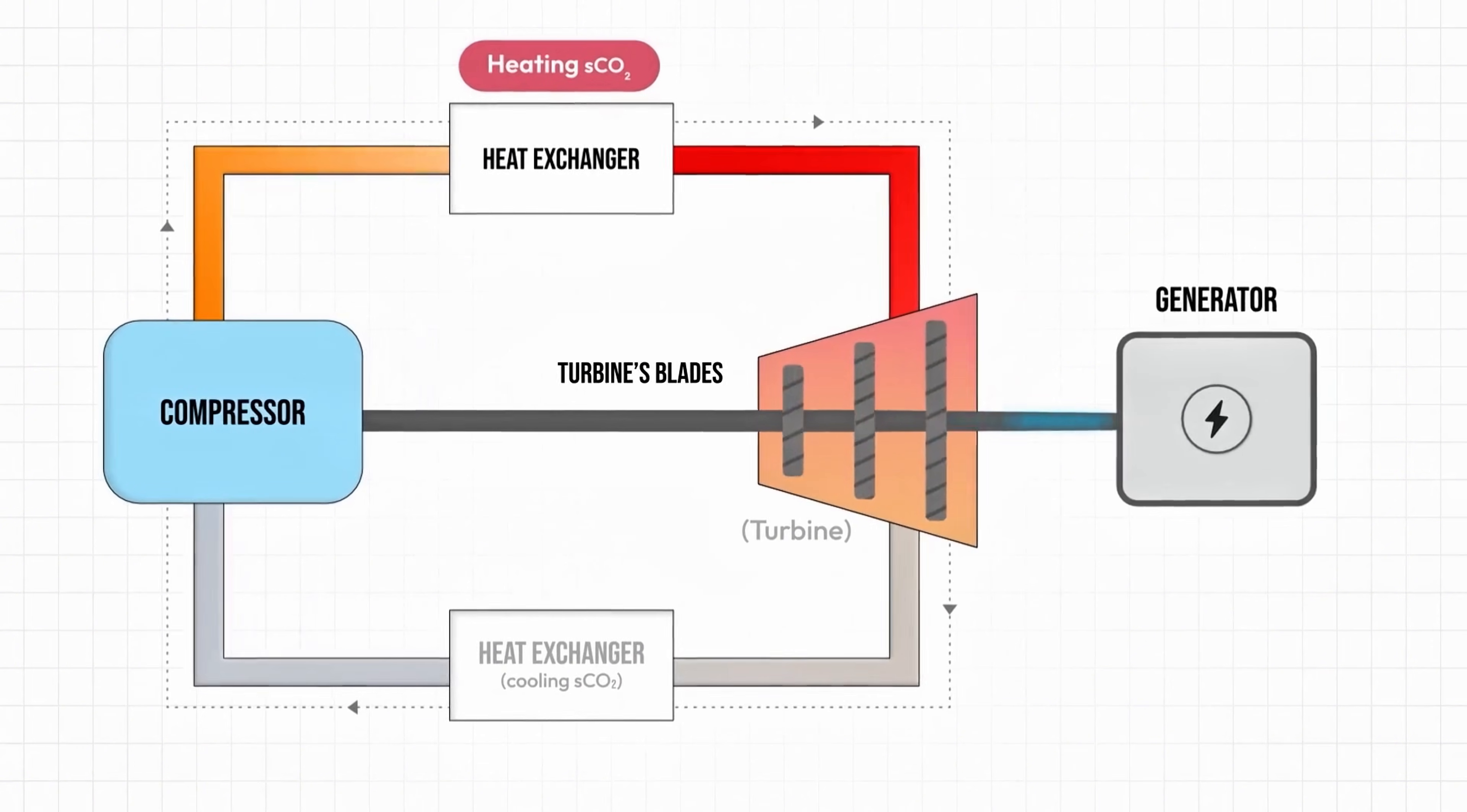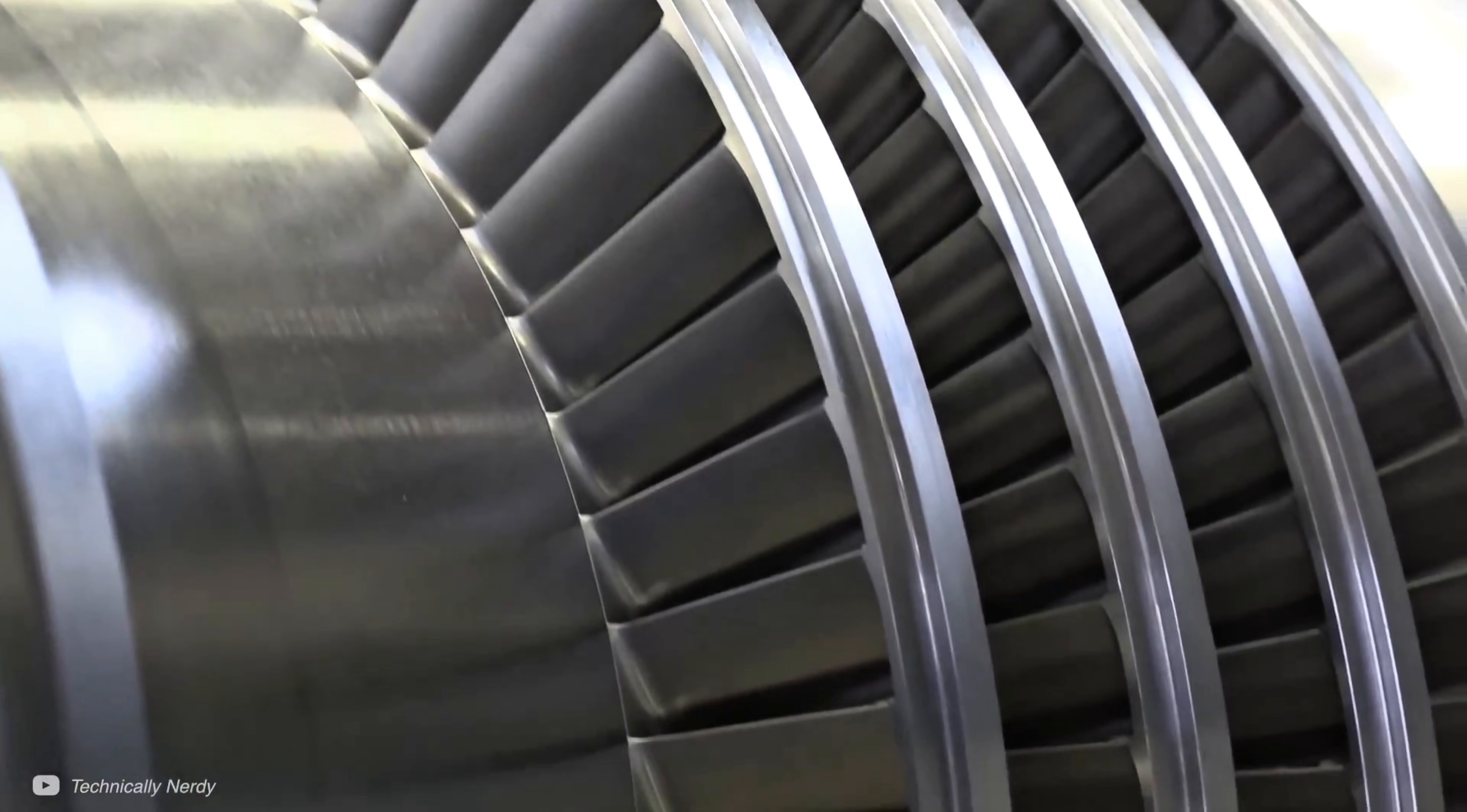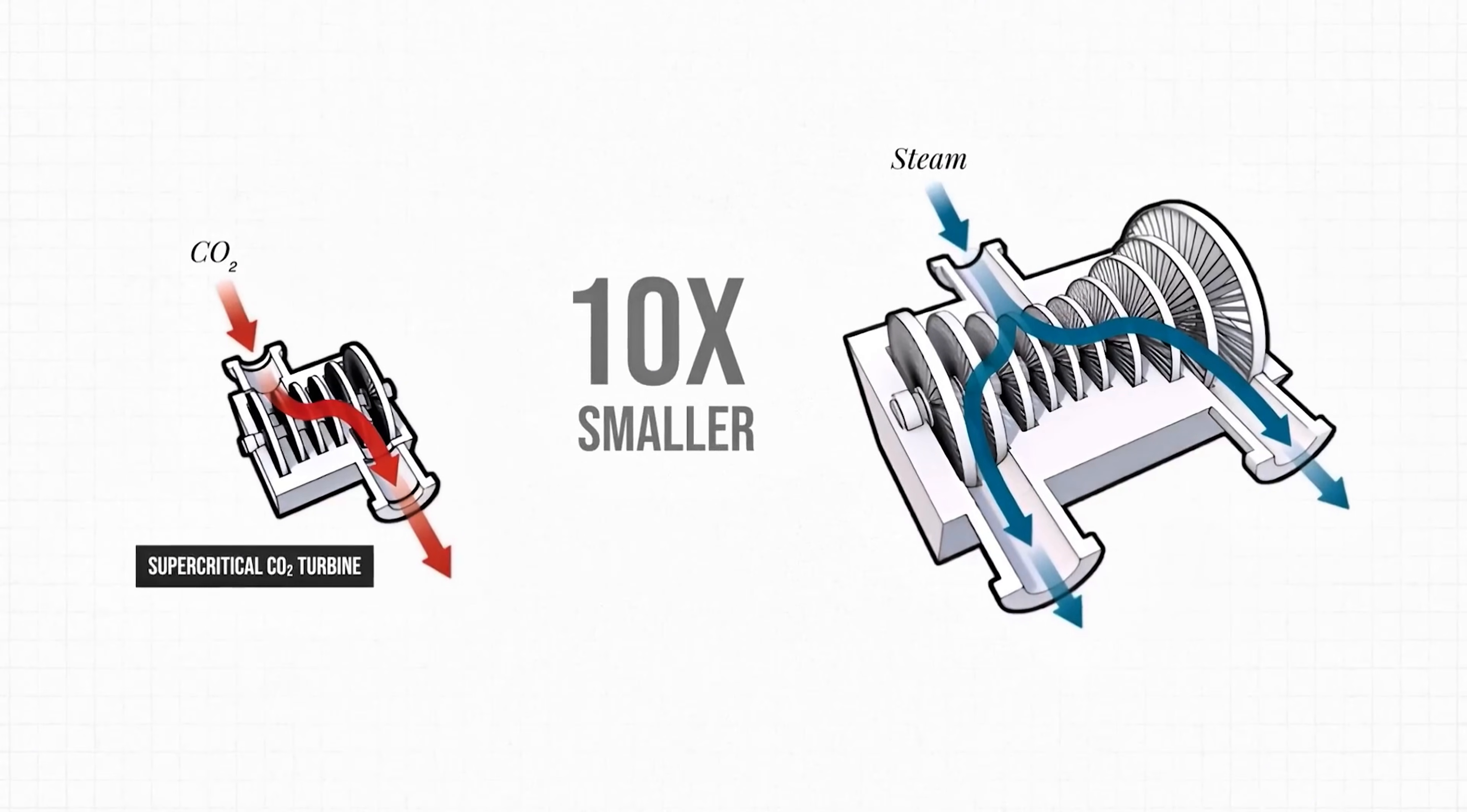Once it's supercritical, tiny changes in temperature or pressure cause huge density shifts in CO2. That's gold for engineers because it means small tweaks can absorb or release large amounts of heat. In short, in the right conditions, CO2 becomes an incredibly effective fluid for carrying thermal energy.